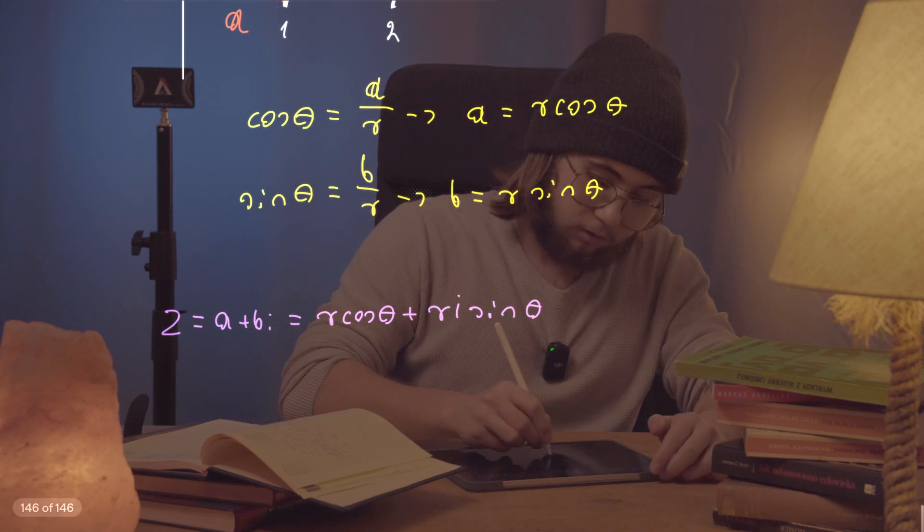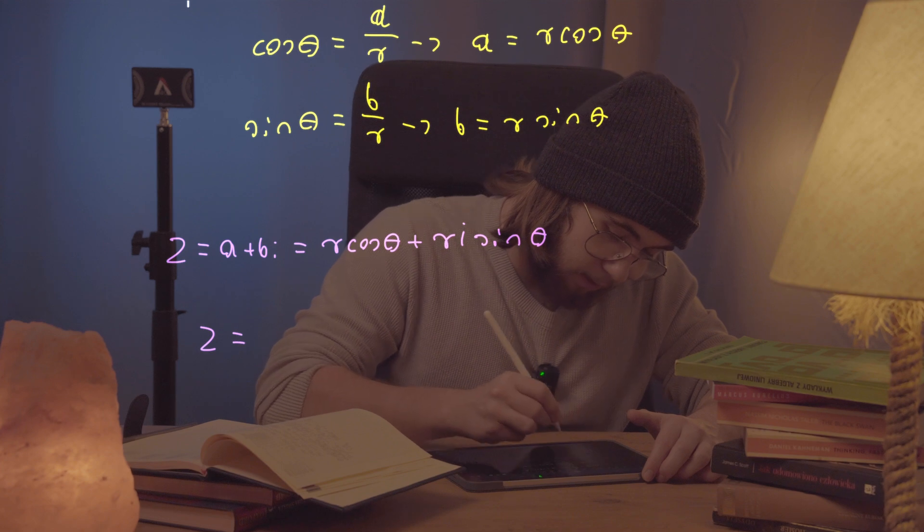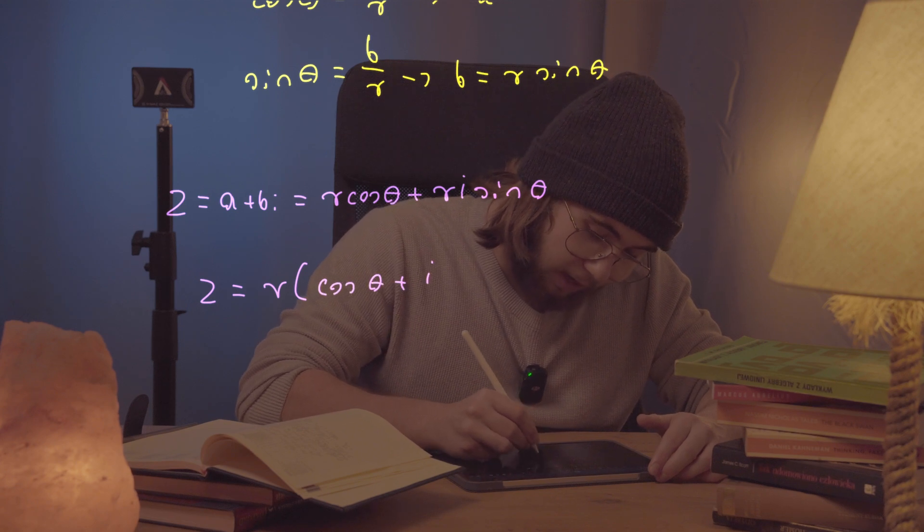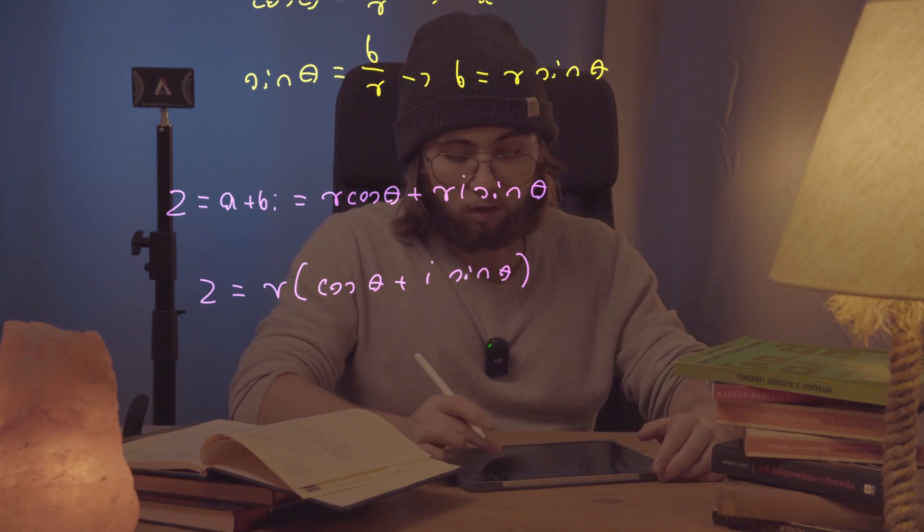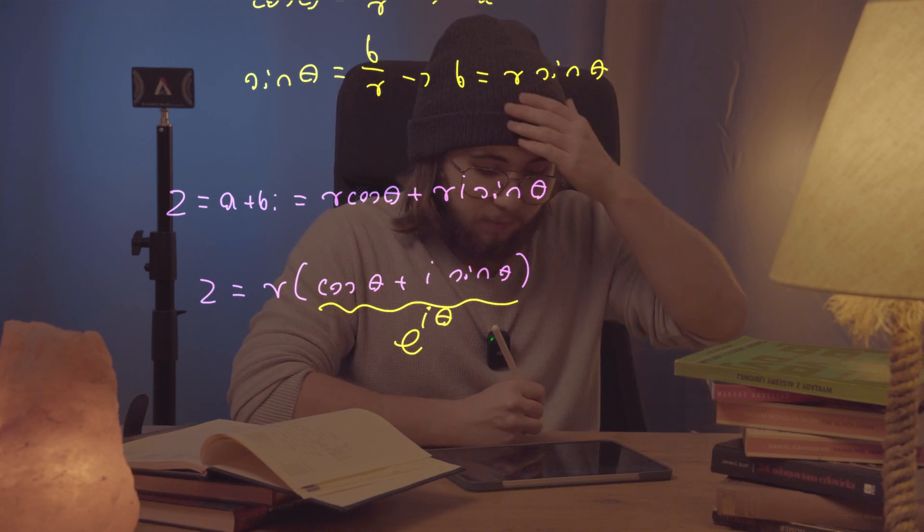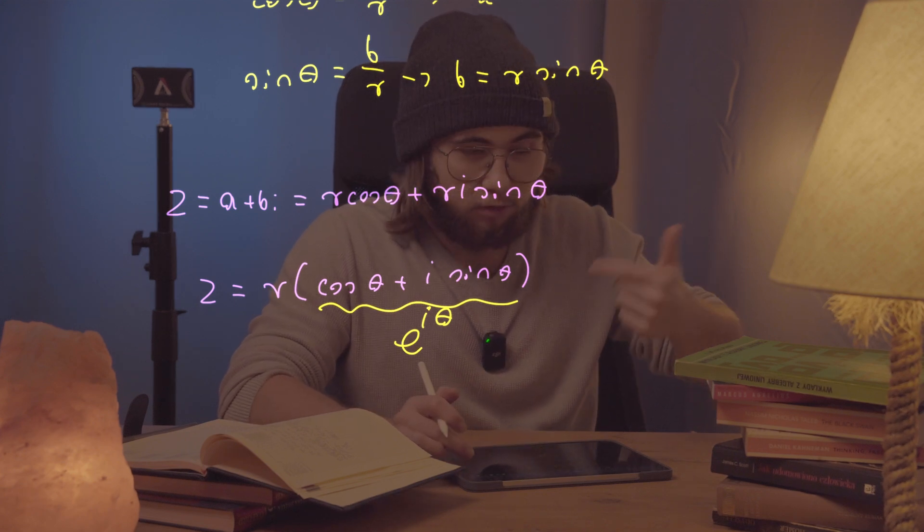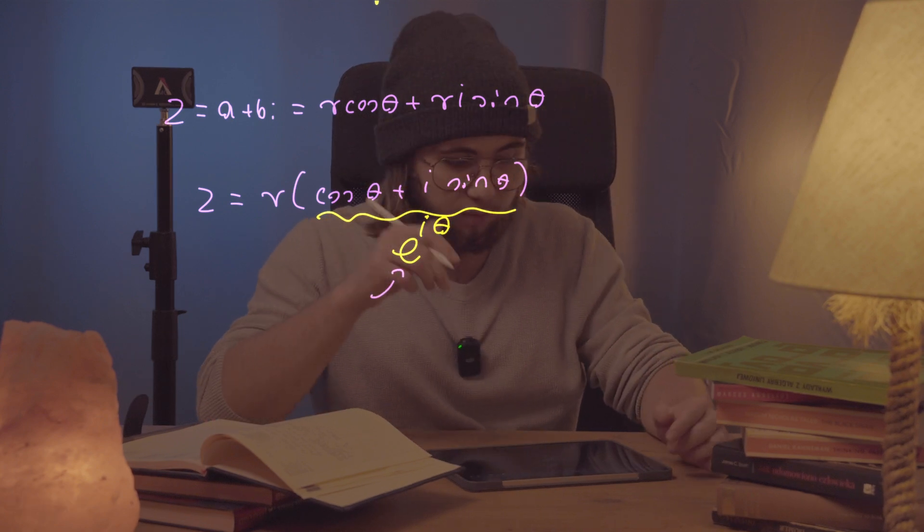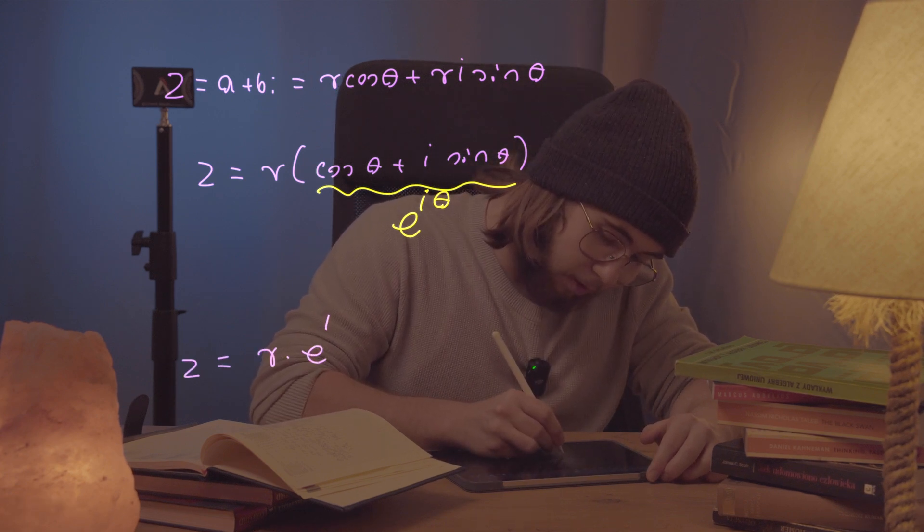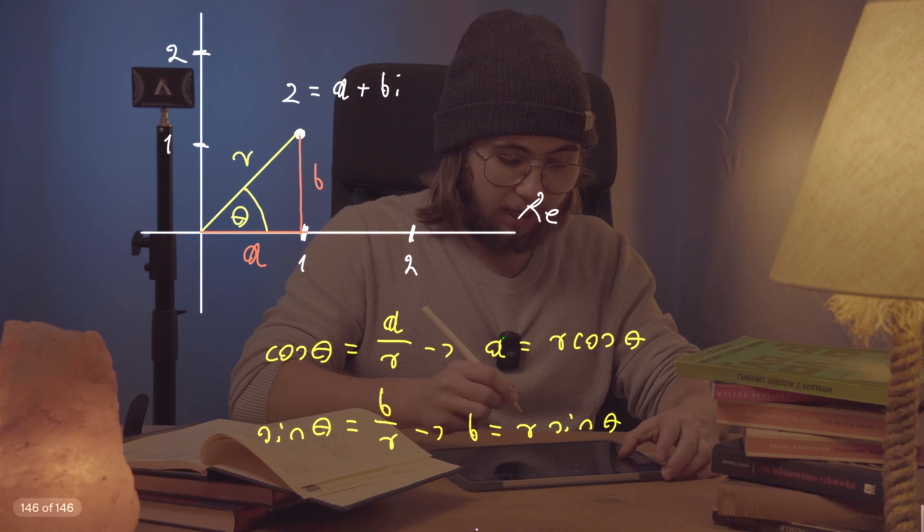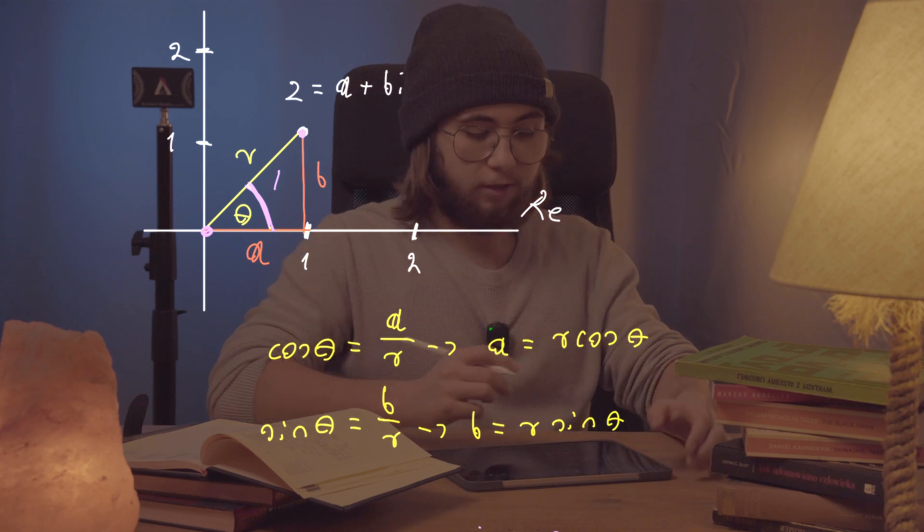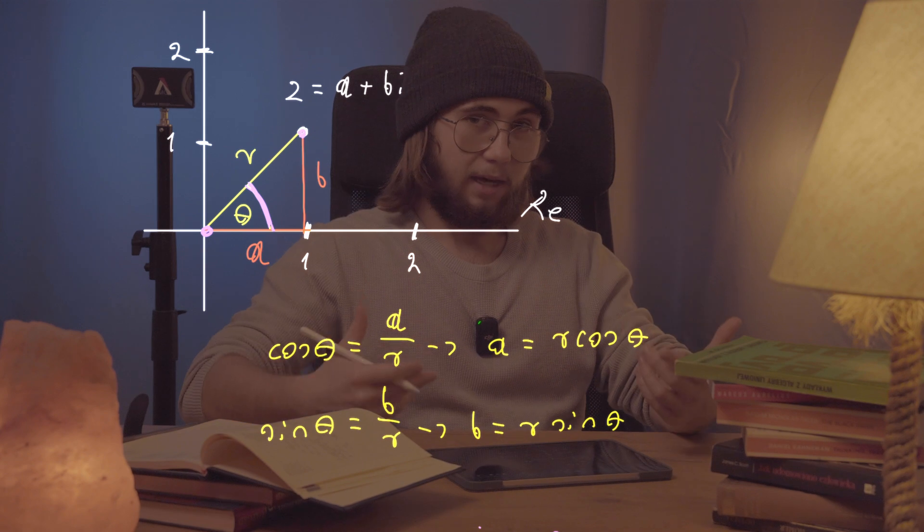But now, kind of just factoring out the r from here, I'm going to be left with z being equal to r multiplied by cosine of theta plus i sine of theta. However, by Euler's formula, this stuff right there is equal to e to the power of i times theta, where r is the length between z and the origin, and theta is the angle right here between the line connecting the origin and point z and the real axis. Awesome.